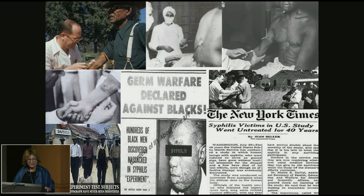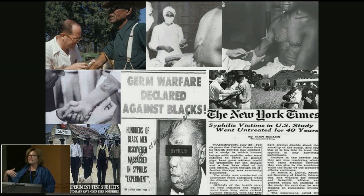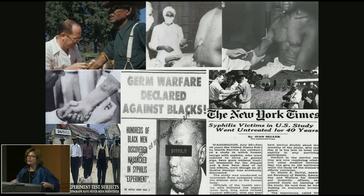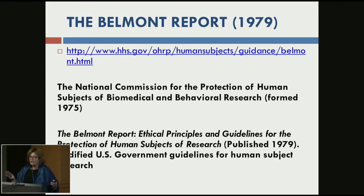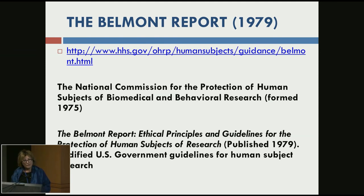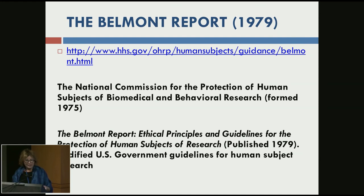The infamous Tuskegee syphilis trial followed 400 African American black males but did not treat them for syphilis. When the trial first started, penicillin wasn't yet a treatment, but the trial continued far beyond when penicillin had become the standard of care — it was the withholding of the standard of care in an observational trial. The Beecher paper in particular was a great influence on the Belmont Report, which came out in 1979, formed by the National Commission for the Protection of Human Subjects of Biomedical and Behavioral Research.